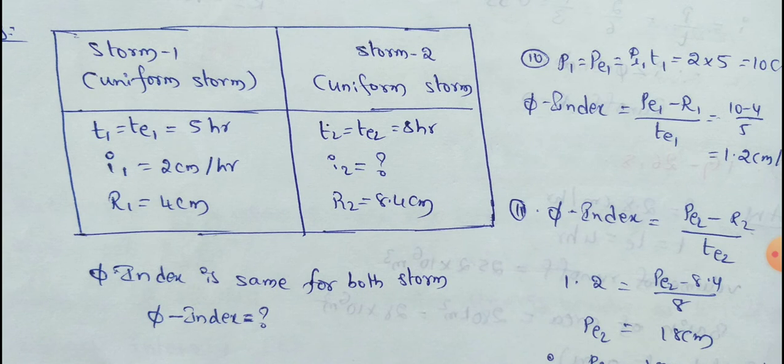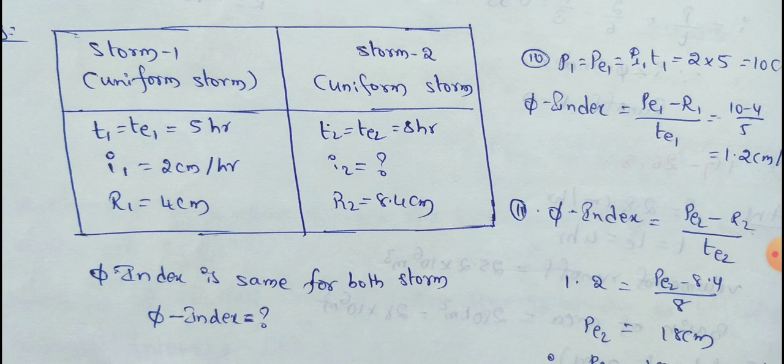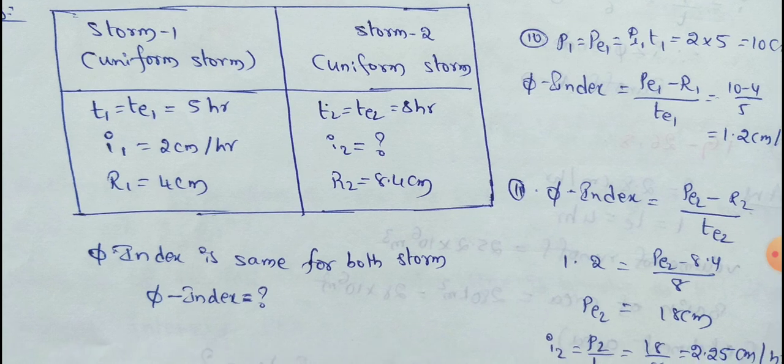The second storm: T2 equals 8 hours. We have the time period, and the intensity of rainfall for the second storm gives a runoff of 8.4 cm.